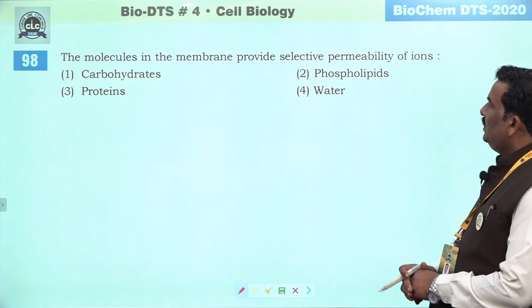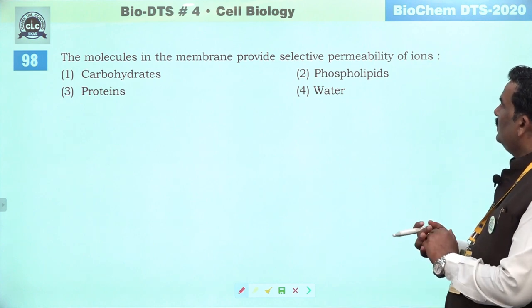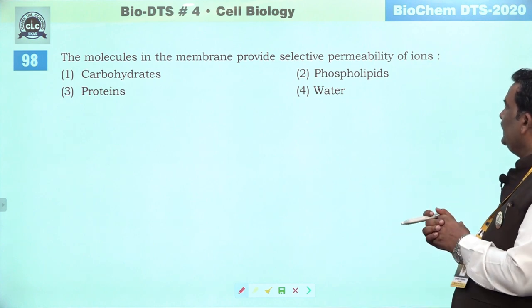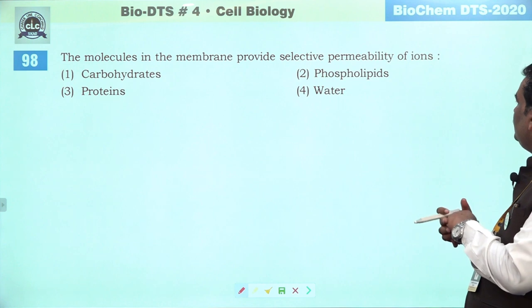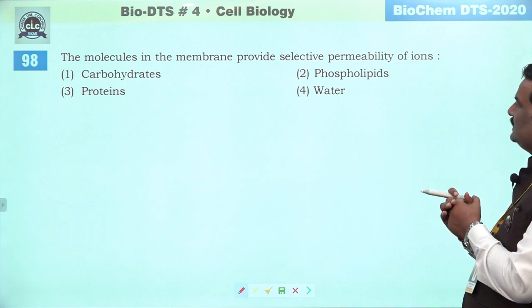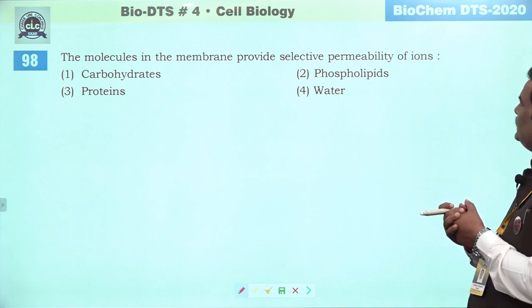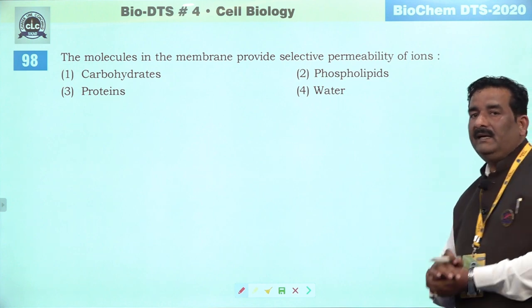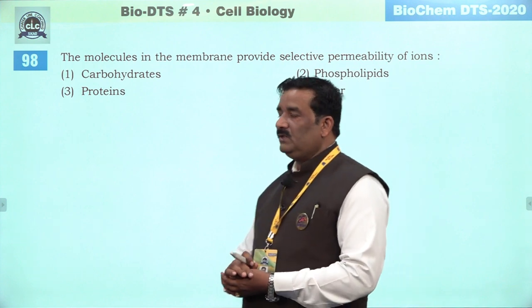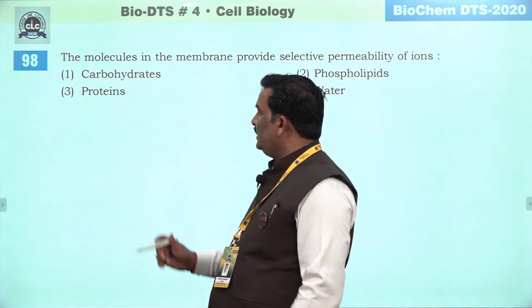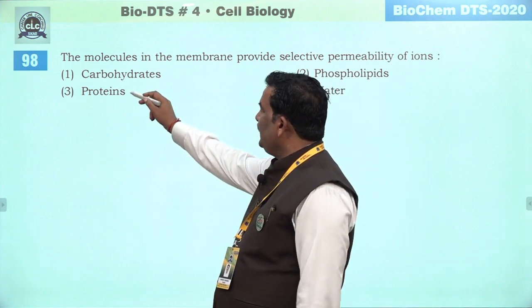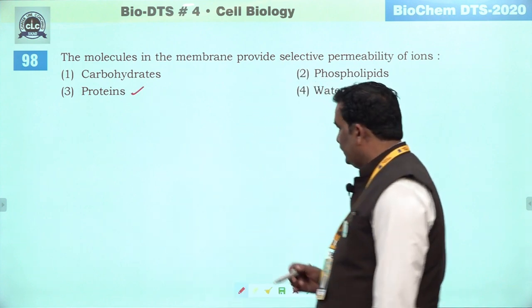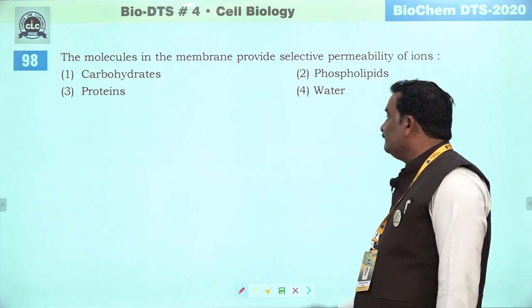Next question: the molecules in the membrane provide the selective permeability of ions. Ion ki permeability decide karega channel protein — toh channel protein kiske bane hote hain — proteins ke. Third is the right answer.